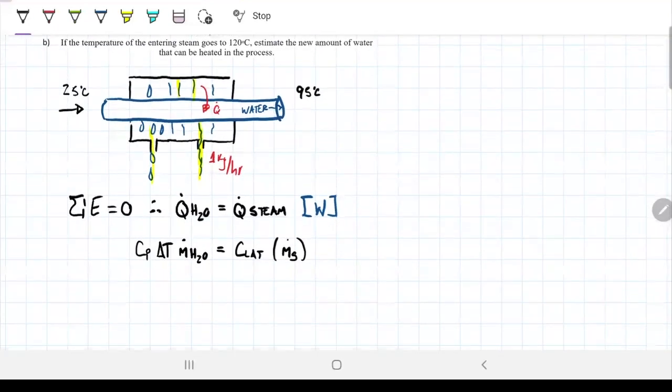Okay, so that means that if I want to know what's the mass flow rate that I can put through the system, I just need to multiply the latent heat from the steam by the mass flow rate of the steam and divide that by the latent of the water, sorry, the specific heat of the water and the delta T of the water.